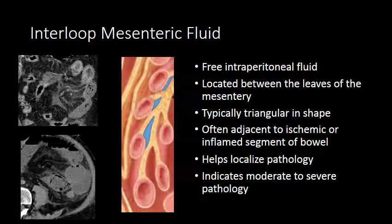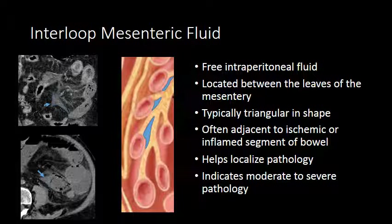It often takes on a triangular configuration, as we can see in these images on the left-hand side, and it is often seen with severe inflammation or ischemia of the bowel. When you see areas of interloop mesenteric fluid, take extra time and caution to identify the etiology, because it often indicates advanced inflammation or ischemia.